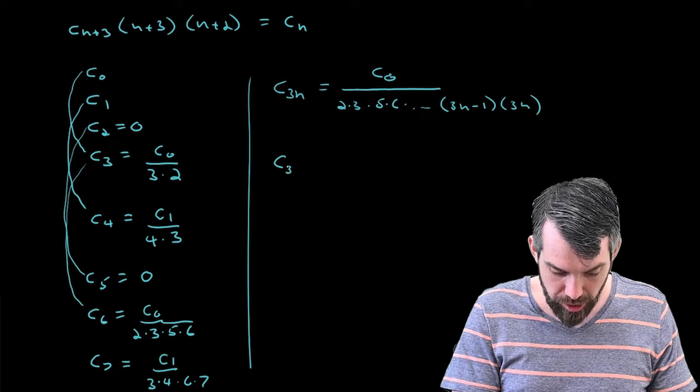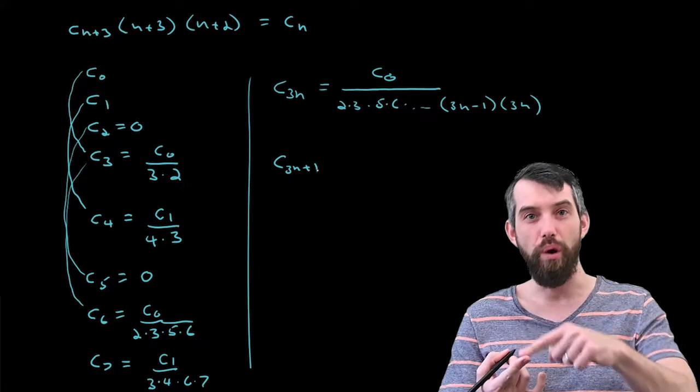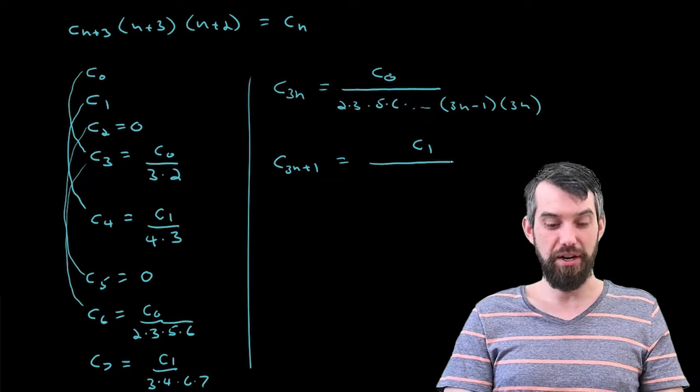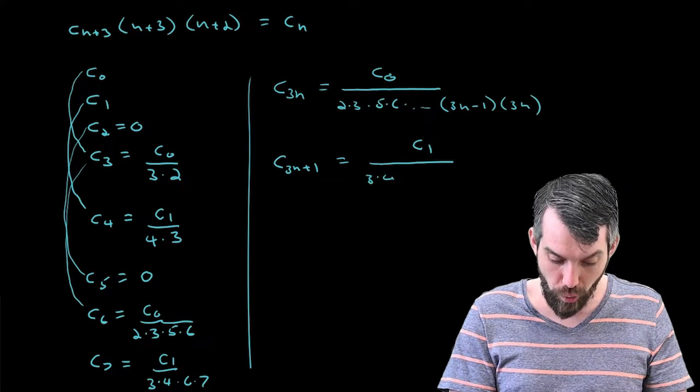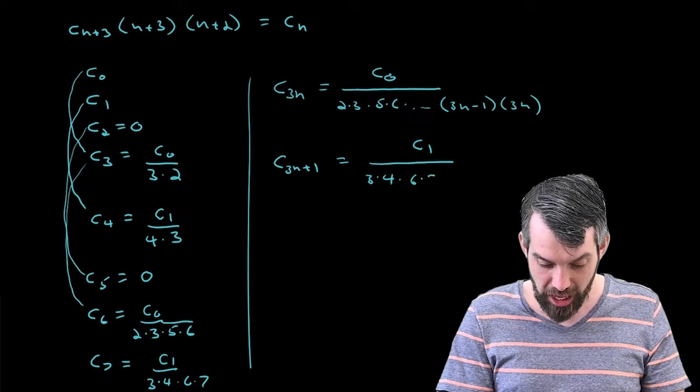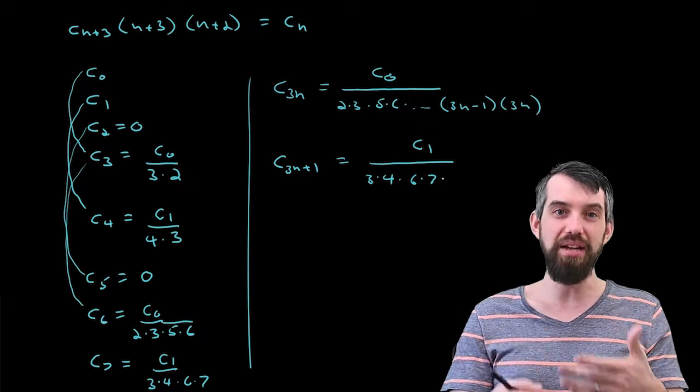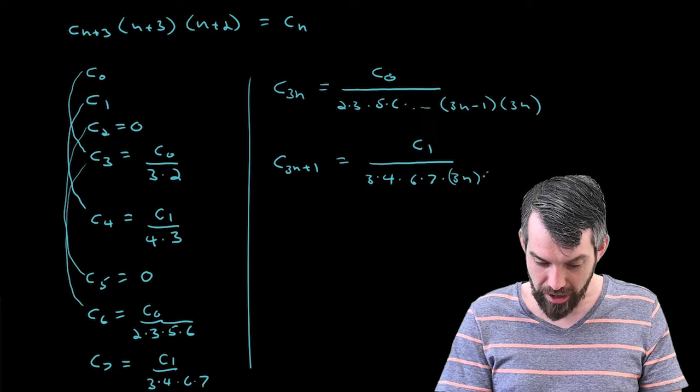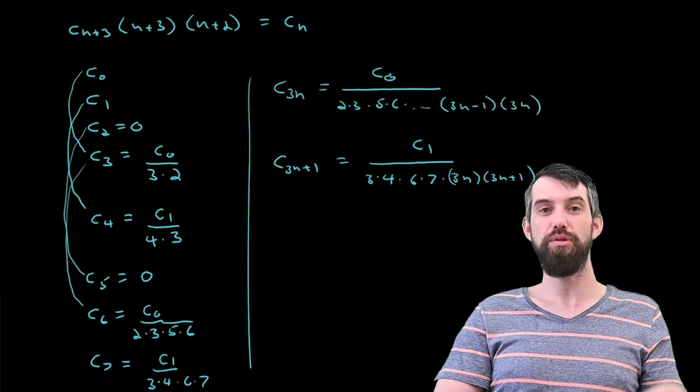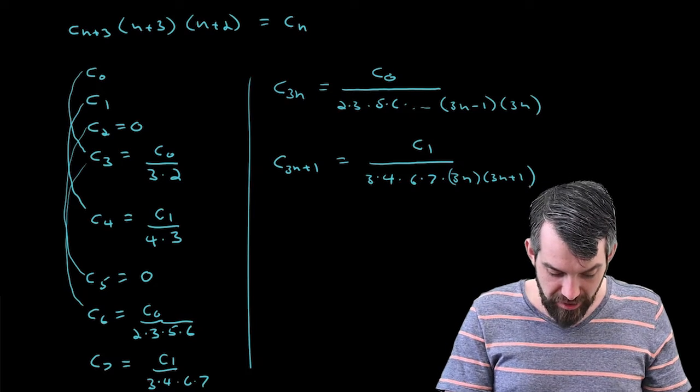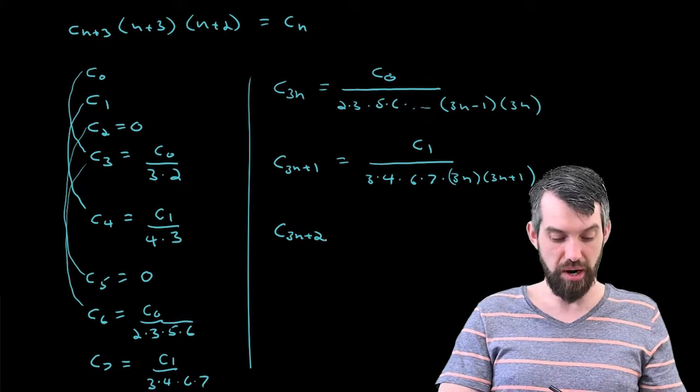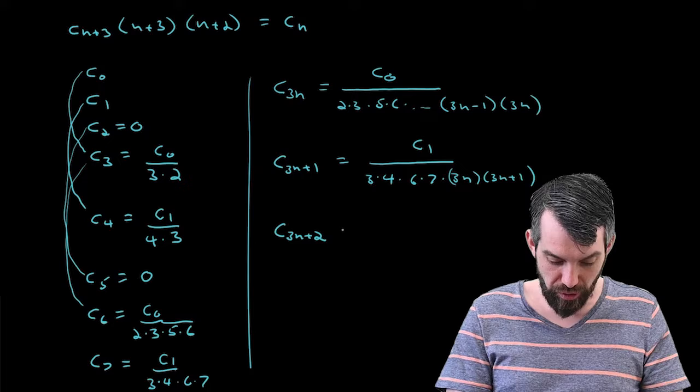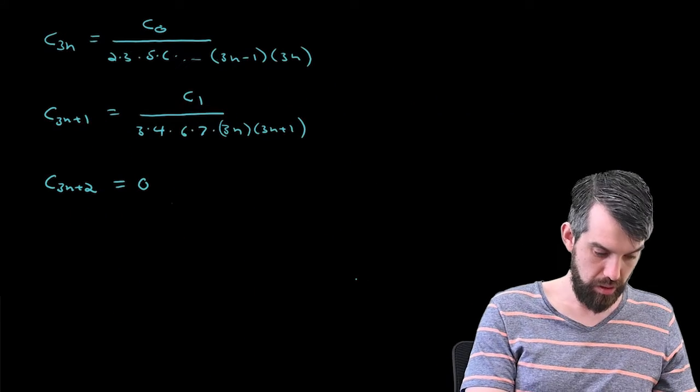So I think we can say the following. If I want to talk about c_3n, so this is 0, 3, 6, 9, and so forth. All of those are the ones related to the c_0. So the general pattern here is that it is going to be the c_0, then divided out by... well, what did it look like? A 2 times 3. Then you skip 4. A 5 times 6. And then you skip 7. And then it would be 8 times 9. And then you skip 10. And then it would be 11 times 12. And generally, this goes on in this matter until you multiply by a 3n minus 1 times a 3n. Then if I want to do c_3n plus 1, so that's the 1, 4, 7, and so forth. This was all related to the c_1. But here it started a different index. So it was 3 times 4. It missed 5. It was 6 times 7. It missed 8. It'd be 9 times 10 and so forth. Generally, it would end up at 3n and 3n plus 1. So those are my generic coefficients. Finally, if it's c of 3n plus 2 here, so now I'm imagining 2, 5, 8, all of those ones are going to be 0.